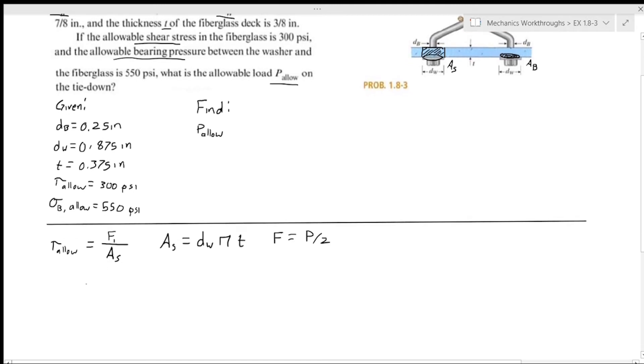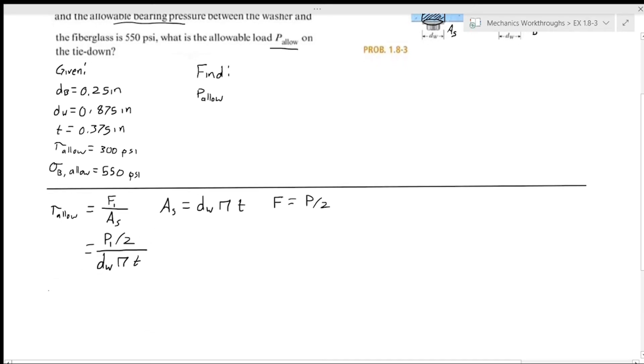So now when we substitute everything in, our f1 will be our p1 over two. I'm calling this p1, which is basically our allowable force due to shear stress. We'll find p2 later, which will be the allowable force due to the bearing pressure, and we will pick which one is more restrictive. That will be our p_allow. So we have this over our shear area, dw*pi*t. We're trying to find p1, so we rearrange. We get p1 = 2*tau_allow*pi*dw*t.